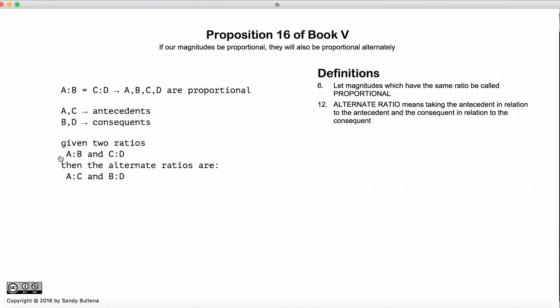Again, let's have two ratios A to B and C to D. Then the definition of the alternate ratios, we swap the B and the C and we have A to C and B to D. So these two ratios are the alternate ratios of these two.